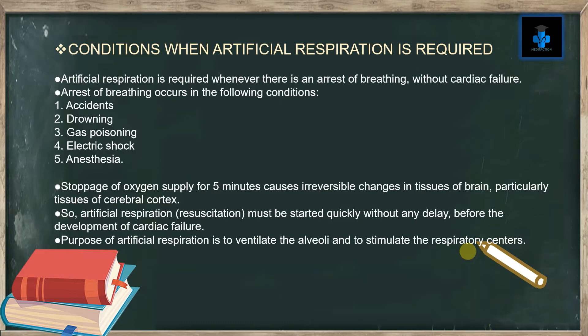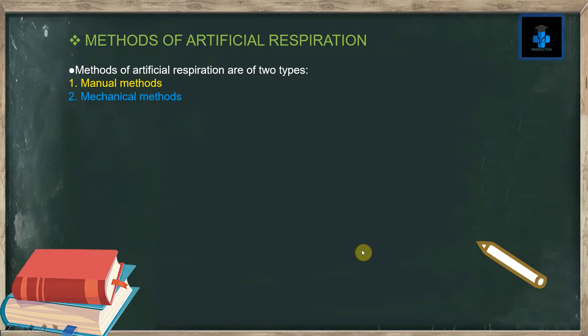So artificial respiration, also known as resuscitation, must be started quickly without any delay, before the development of cardiac failure. The purpose of artificial respiration is to ventilate the alveoli and to stimulate the respiratory centers. Methods of artificial respiration are of two types: number one, manual methods; number two, mechanical methods.